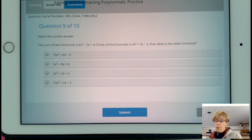the 6x squared minus 5x plus 4. It says if one of the trinomials is 4x squared plus 3x minus 2, what is the other trinomial?